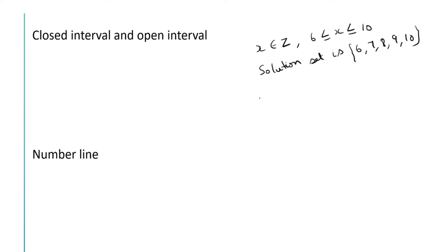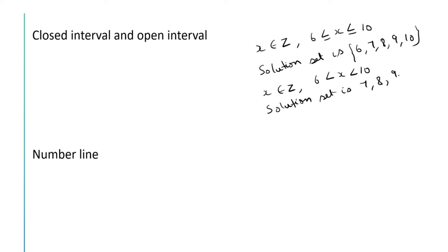On the other hand, if x is an integer and 6 < x < 10, then the solution set will be {7, 8, 9}, that is x can take the values 7, 8 and 9. Here 6 and 10 are not included because it is given 6 < x < 10, so we should not include 6 and 10.